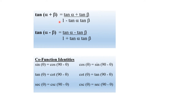Tan(alpha plus beta) is equal to tan alpha plus tan beta divided by 1 minus tan alpha tan beta. Tan(alpha minus beta) is equal to tan alpha minus tan beta divided by 1 plus tan alpha tan beta.